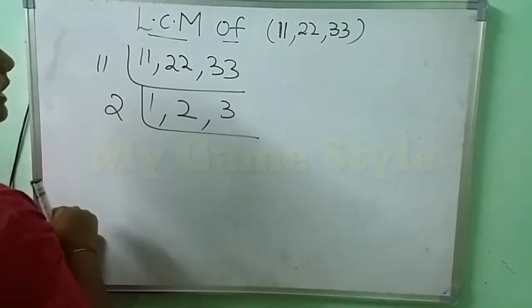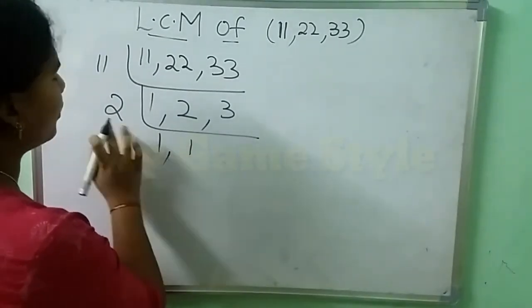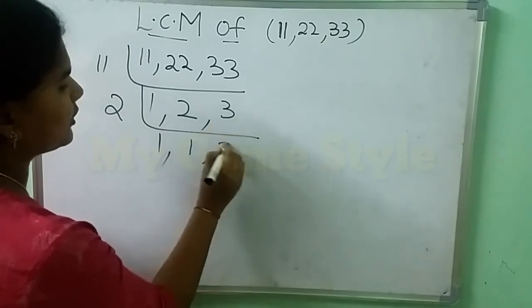Now I am taking 2 table here. This 1 has it is. 2 times 1 is 2. This 3 has it is.